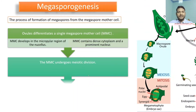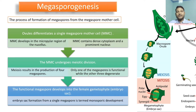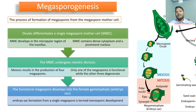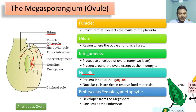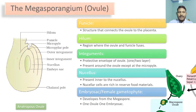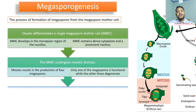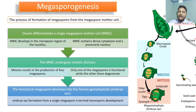Megasporogenesis is the process of formation of megaspores from the megaspore mother cell (MMC). The ovule, which is a megasporangium, differentiates into a single megaspore mother cell. Note that in males we use the term PMC; here we use MMC. The MMC develops in the micropilar region of the nucellus and contains a dense cytoplasm and a prominent nucleus. The MMC is diploid in nature.